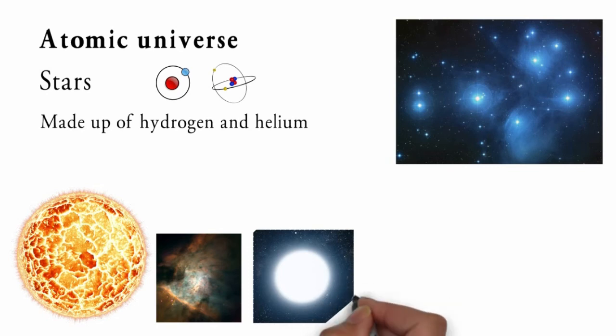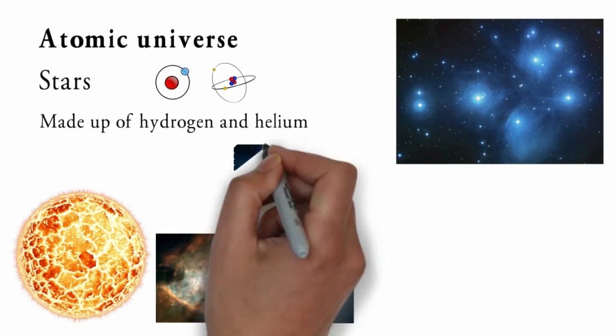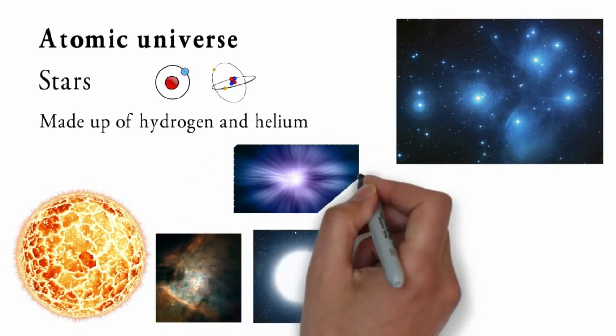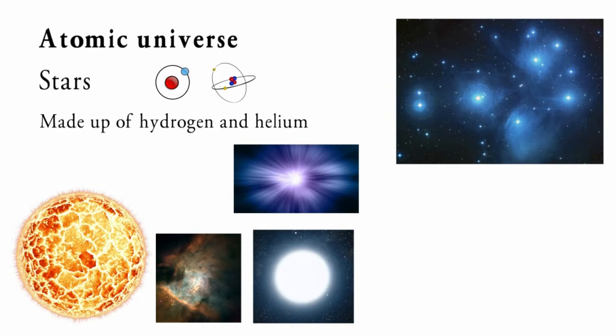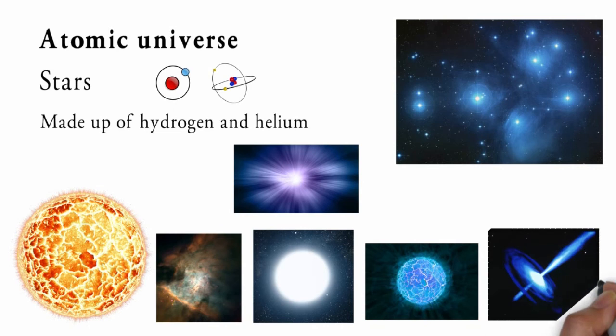If the star is massive, it will carry on nuclear reactions in its core, forming heavier elements like iron. At this point, the temperature at the core is about 100 billion degrees and it loses the fight against gravity, exploding in the form of a huge explosion called a supernova. The leftover star core is converted into either a neutron star or a black hole, depending on its mass.